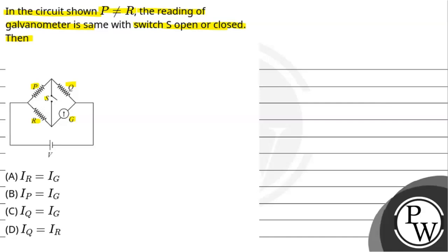We know that P is not equal to R, but whether we open or close the switch, the galvanometer has the same reading. We need to determine which option is correct.